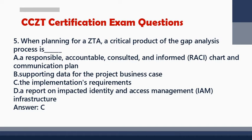Question 5: When planning for a ZTA, a critical product of the Gap Analysis process is: A. A Responsible, Accountable, Consulted, and Informed (RACI) Chart and Communication Plan. B. Supporting Data for the Project Business Case. C. The Implementation Requirements. D. A Report on Impacted Identity and Access Management (IAM) Infrastructure. Answer: C.